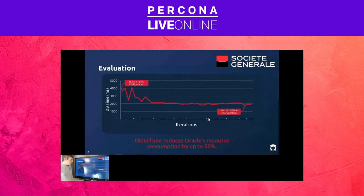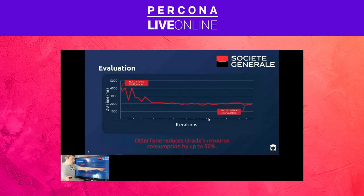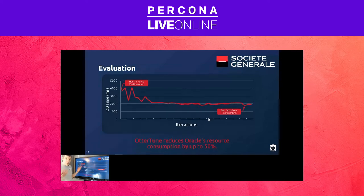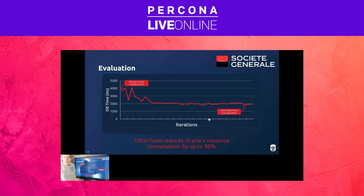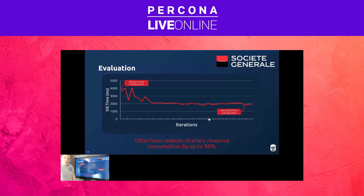The results we were able to achieve at the bank: on one side of the graph you see the measured performance using the hand-tuned configuration from the DBAs. Over multiple iterations, the best configuration that Autotune achieved reduced resource consumption as defined by dbtime by 50%. This was roughly about three days of tuning approximately 20 knobs. We went back to the bank and said, fantastic — we can reduce the overhead of this database by 50%. You could shut down machines, turn off some CPUs, and pay Oracle less since Oracle charges per CPU core. They said they had no idea what that would mean because they'd never been in a position to pay Oracle less money.